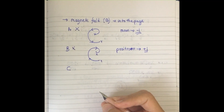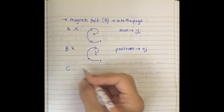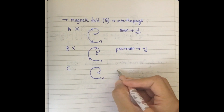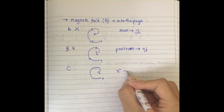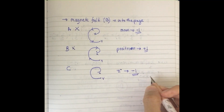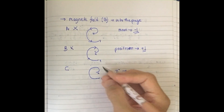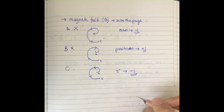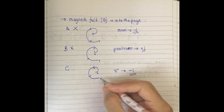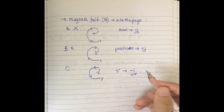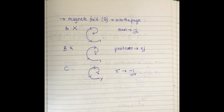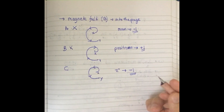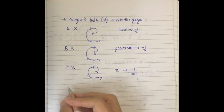Option C: a negative pion traveling from x to y. A negative pion has a negative charge. The direction given is x to y, meaning the radius is increasing. But for a negative charge we want decreasing radius. If it were going from y to x, C would be correct since the radius would be decreasing. In this scenario it's not happening that way, so option C is also incorrect. You can confirm this with Fleming's left-hand rule.